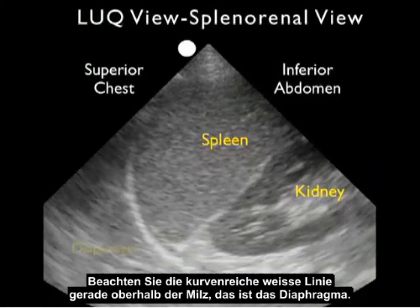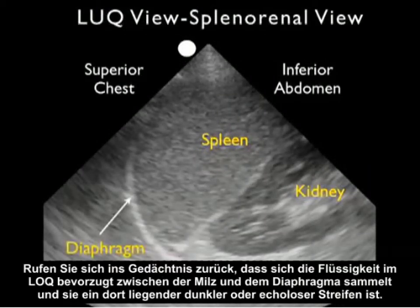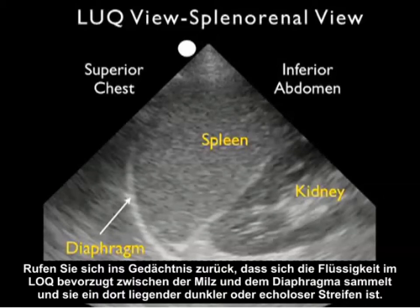Notice the curving white line just above the spleen, which is the diaphragm. Recall that in the left upper quadrant, fluid will accumulate preferentially in between the spleen and the diaphragm and will appear as a dark or anechoic stripe positioned there.